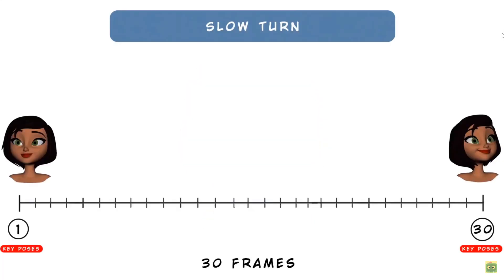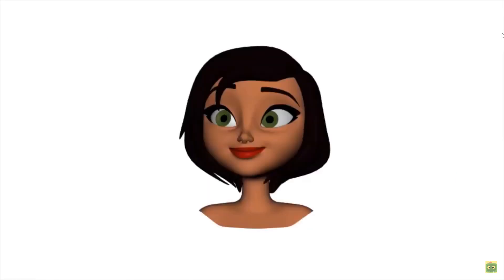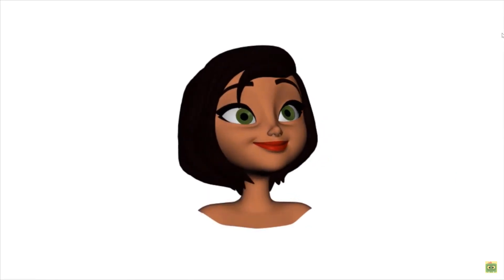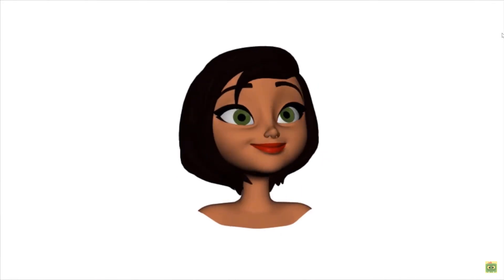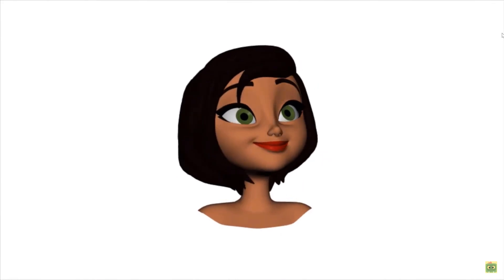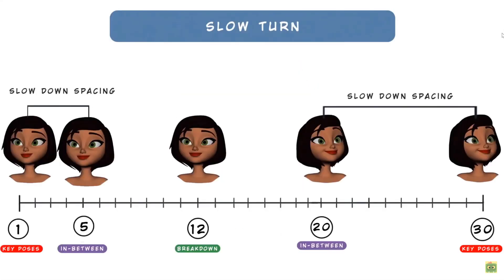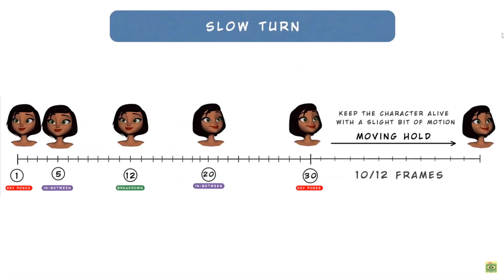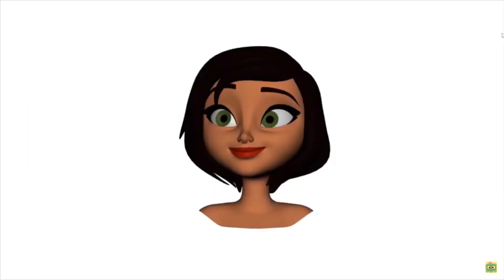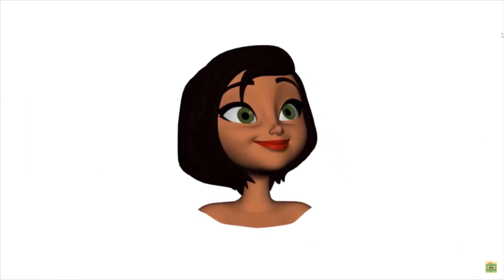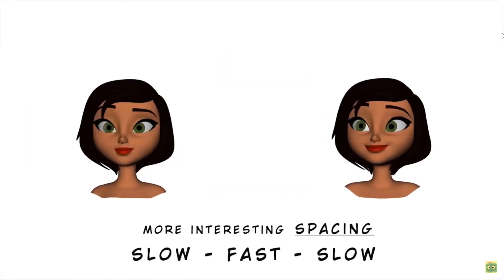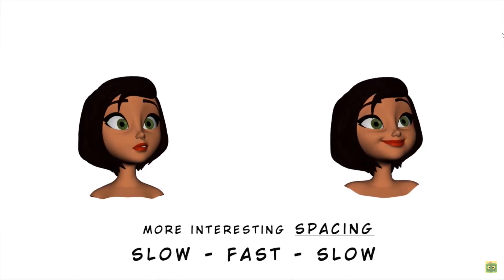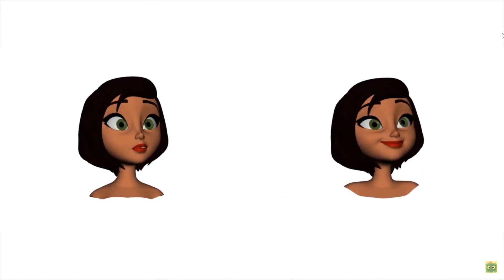Let's do the same with the slower turn. At the beginning we have just two poses and the linear interpolation. Then we add a breakdown pretty close to the first pose where she also makes a blink. Then we add the slow in and slow out, the moving hold, and the hair overlap. And now the two turns have a much more interesting spacing — slow, fast, slow — instead of linear. This makes the character more alive and appealing.